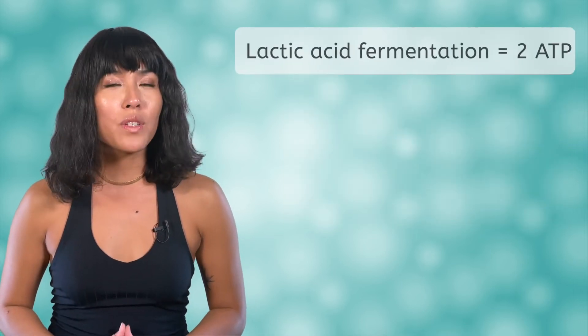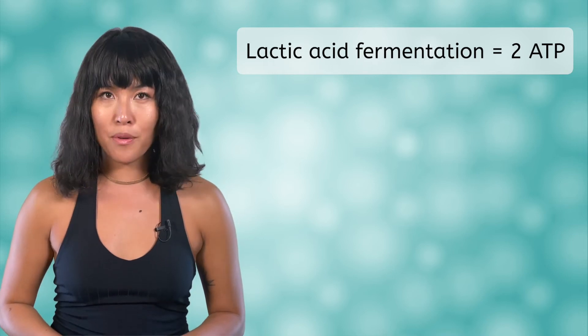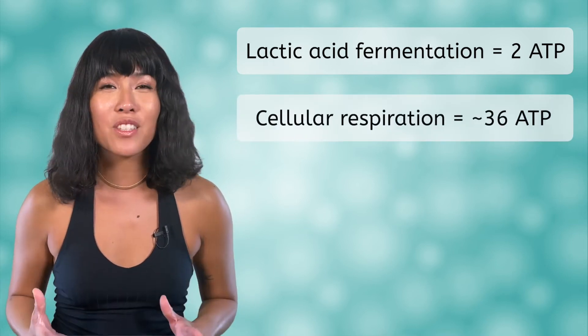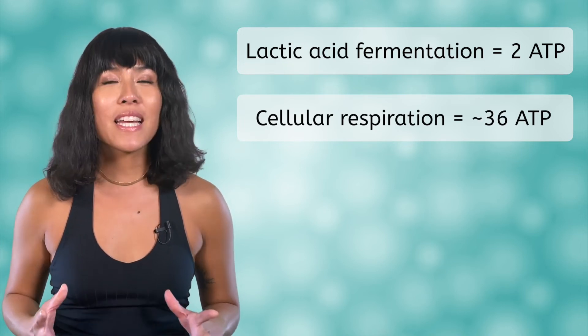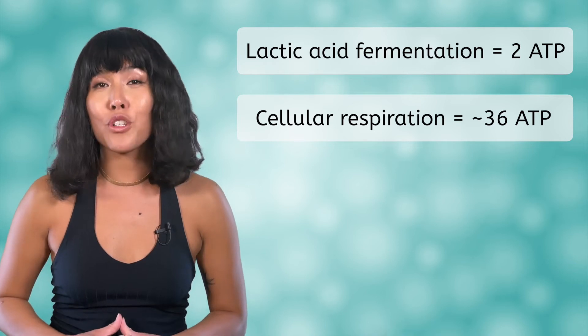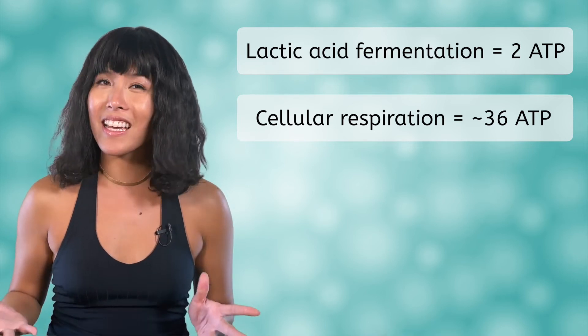So, which cell types perform lactic acid fermentation in the absence of oxygen? Animal muscle cells can, and that includes our muscles. When a human or other animal is exerting themselves — for example while running — and their cells are deprived of oxygen, muscle cells can temporarily use lactic acid fermentation to meet their energy needs. Cells only get 2 ATP per glucose during fermentation, compared to roughly 36 from aerobic cellular respiration. Fermentation is a much less efficient way to produce ATP, but it's better than nothing in a pinch.